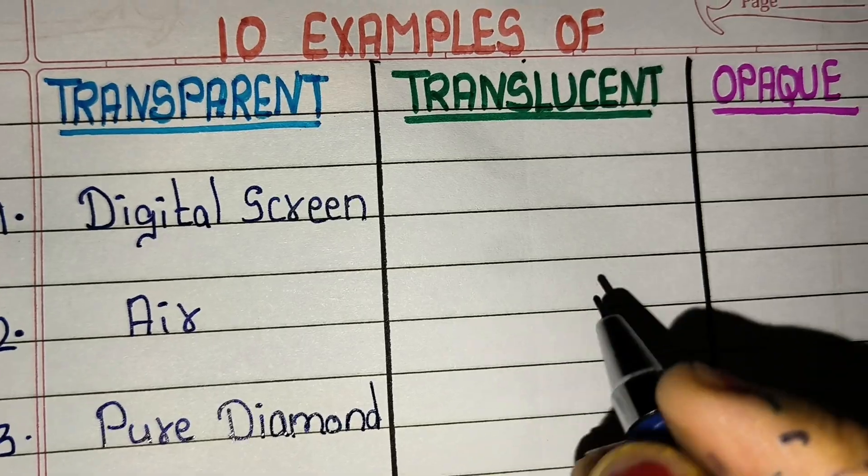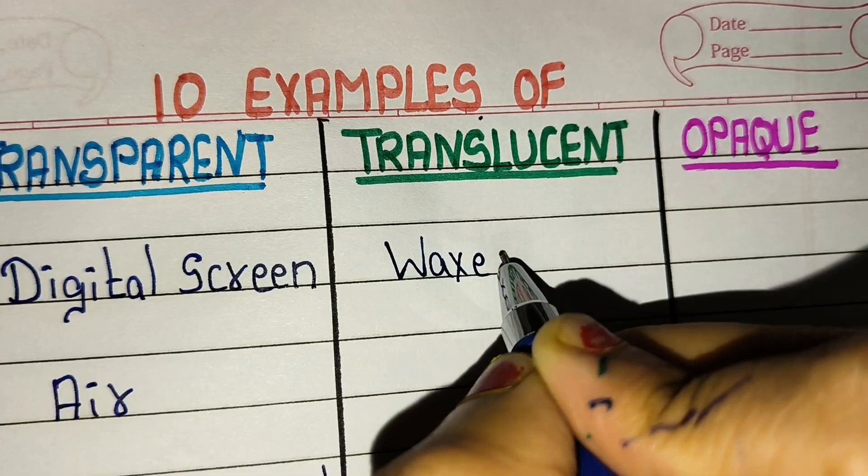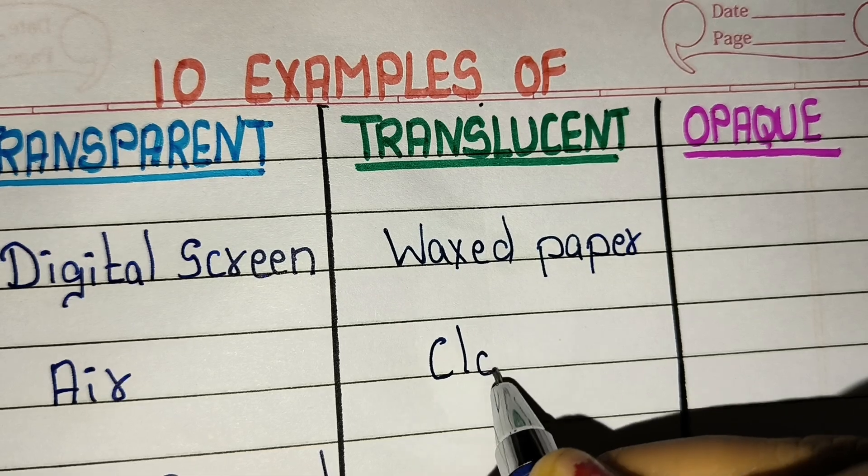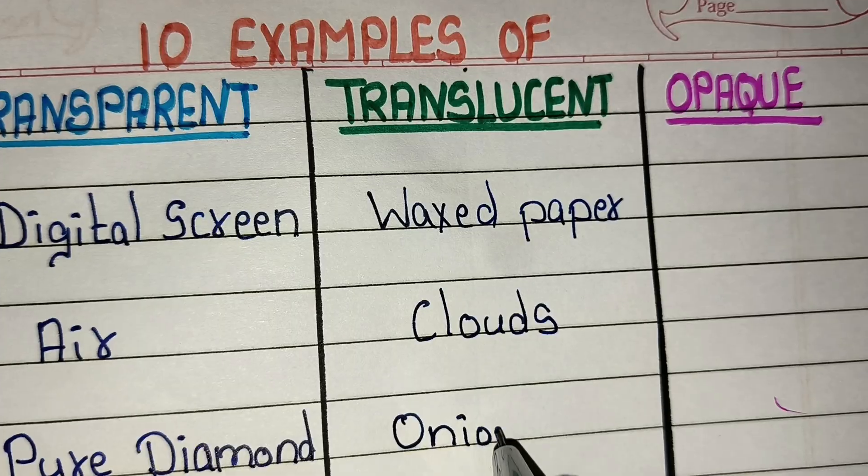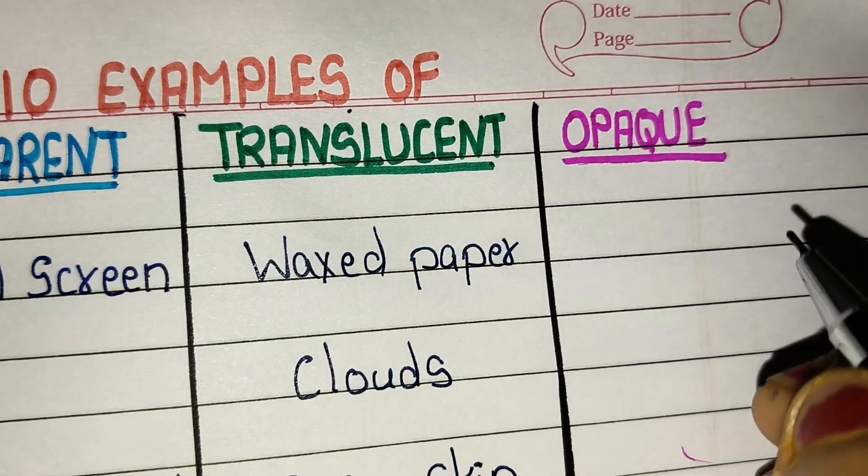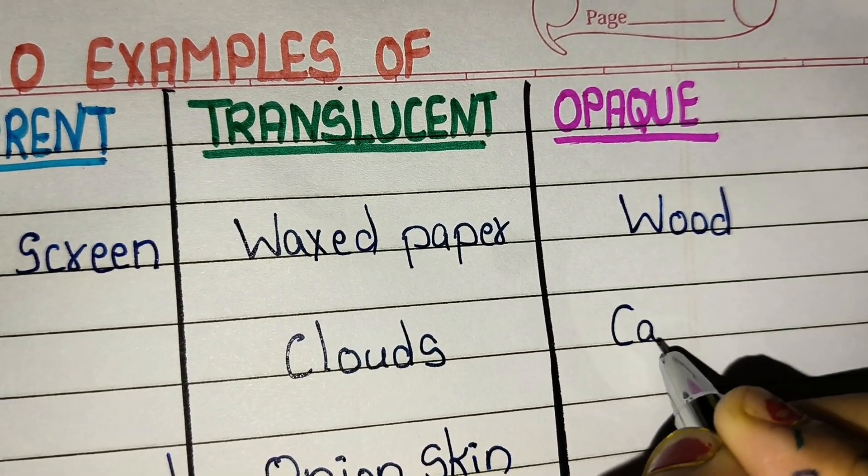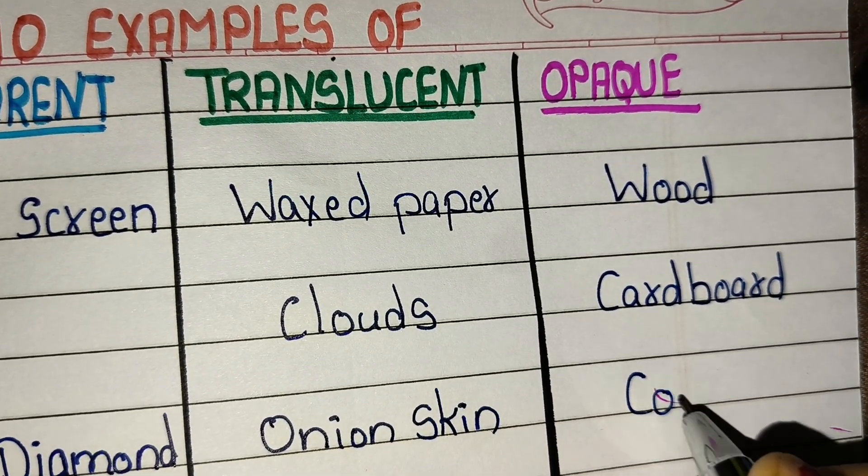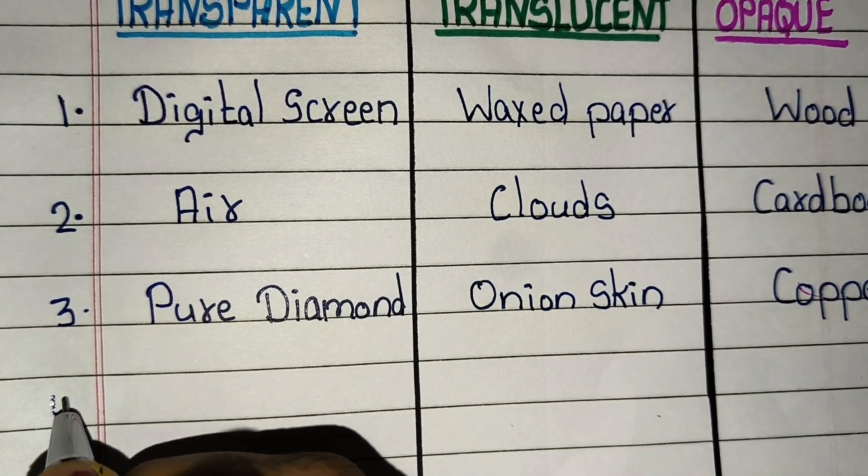Now let's start examples of translucent: waxed paper, clouds, onion skin. Examples of opaque are wood, cardboard, copper.